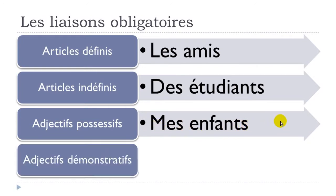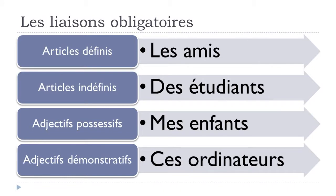And of course les adjectifs démonstratifs — 'this' or 'these'. I took the plural form: 'ces' followed by 'ordinateurs' (computers). You should make the liaison between S and O: ces ordinateurs. So to recap: les amis, des étudiants, mes enfants, ces ordinateurs — in all these cases you should make the liaison without any doubt.